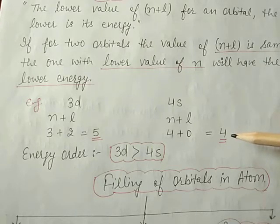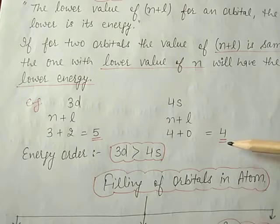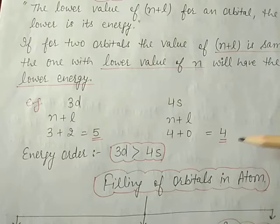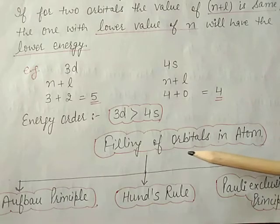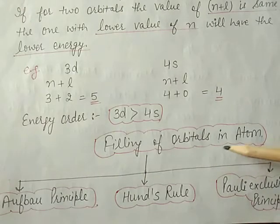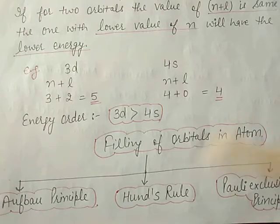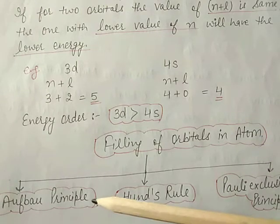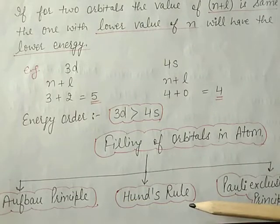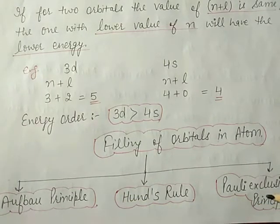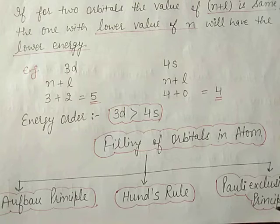The energy of orbitals in the same sub-shell decreases as the atomic number increases. Now the next topic is the filling of orbitals in an atom, which follows three rules: first, the Aufbau principle; second, Hund's rule; and third, the Pauli exclusion principle.